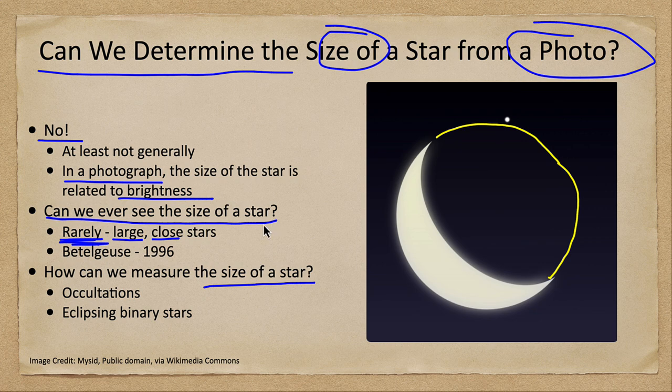How does that help us determine anything? We can use the amount of time it takes for the star to disappear behind the moon. If the star is so far away that it's just a point, it would disappear right away — there and then gone. If it has a slight size to it, even if we can't see that, it will take a little bit of time to disappear behind the moon, and we can use that in various measurements to determine the size of a star.